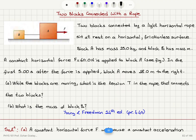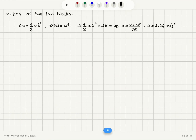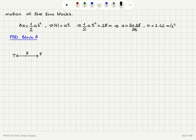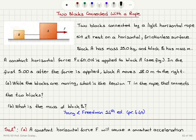To answer part A — what is the tension in the rope — I'm going to draw a free body diagram for block A. I look for the forces acting on this block. Block A, modeled as a particle, feels the horizontal force F to the right. The tension in the rope opposes this force, so tension acts to the left on block A and to the right on block B.